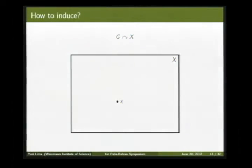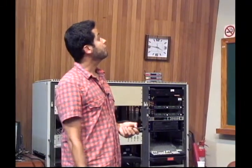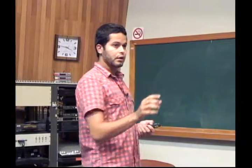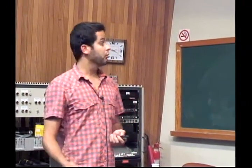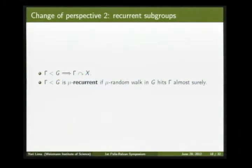The question is: how do you induce the action? You have many ways of iterating a point — you could apply g₁ to x, then g₂ to g₁(x), then g₃, and so on. We have a problem because of this random character: we have many ways of iterating. When you have only one transformation you can only iterate under that transformation, but here we have many. So we change perspective again: instead of looking at inducing on the space X, we look at recurrence on the group itself.